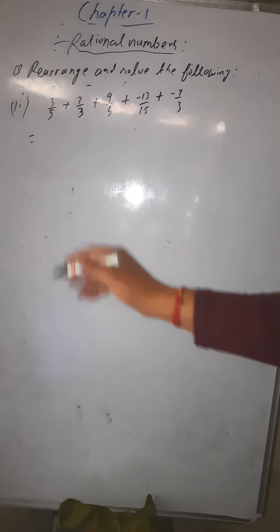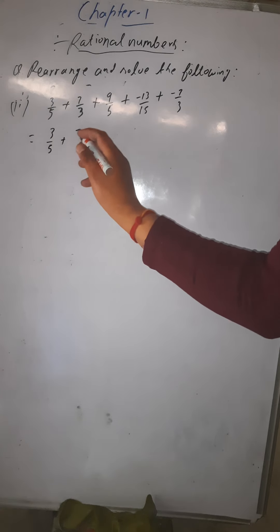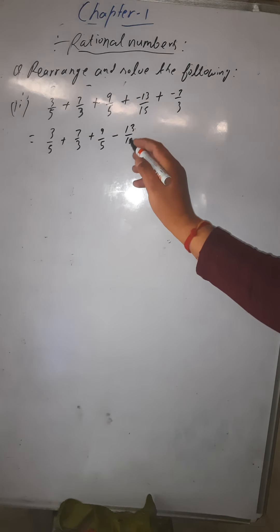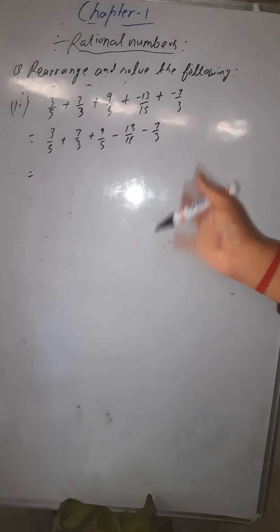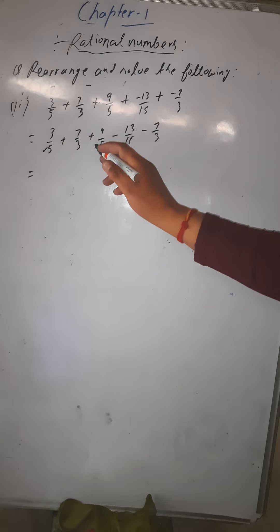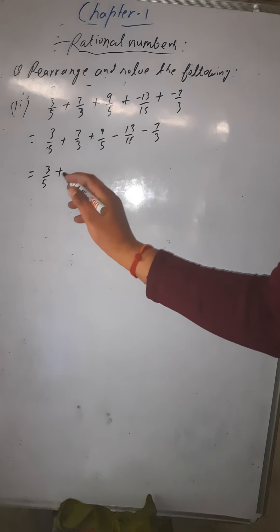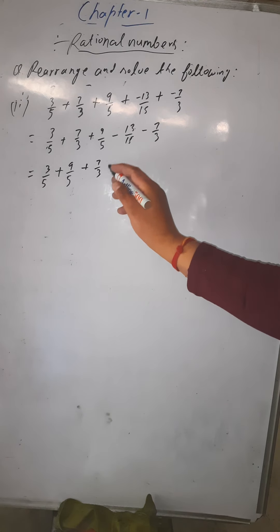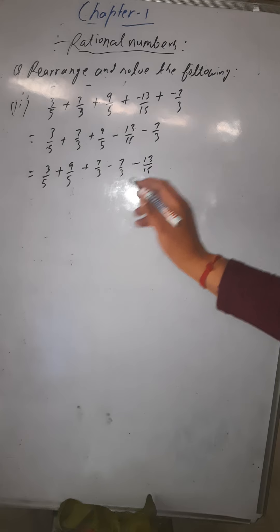First, change the signs: it becomes 3/5 + 7/3 + 9/5 minus 13/15 minus 7/3. Now group the rational numbers with the same denominators. Write 3/5 and 9/5 together, and write 7/3 and minus 7/3 together. Minus 13/15 is left separately.